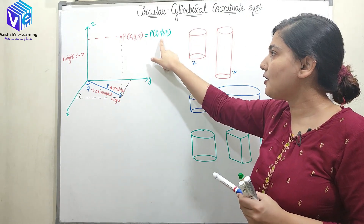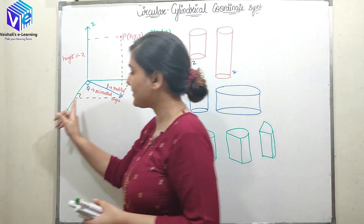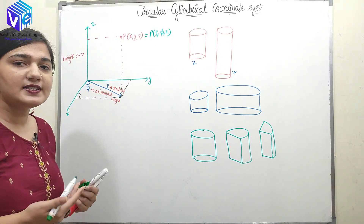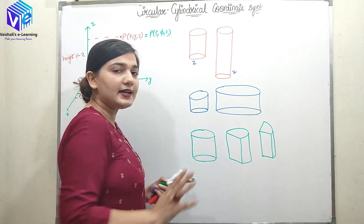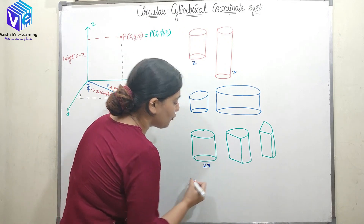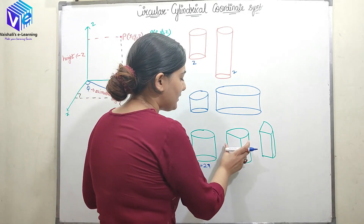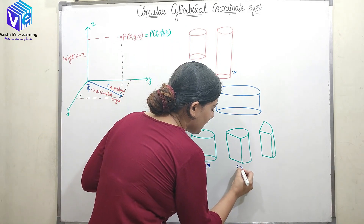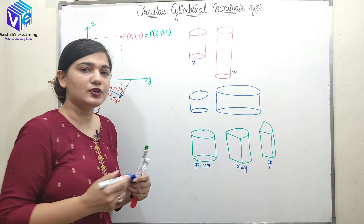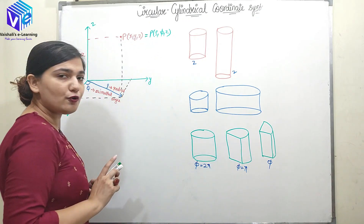Now what is phi? Phi is the azimuthal angle — the angle made with the x-axis. It represents what type of cylinder we have. If it is a full cylinder, phi equals 2π. If it is a half cylinder, phi equals π. Phi can be any arbitrary value, and its range is from 0 to 2π.